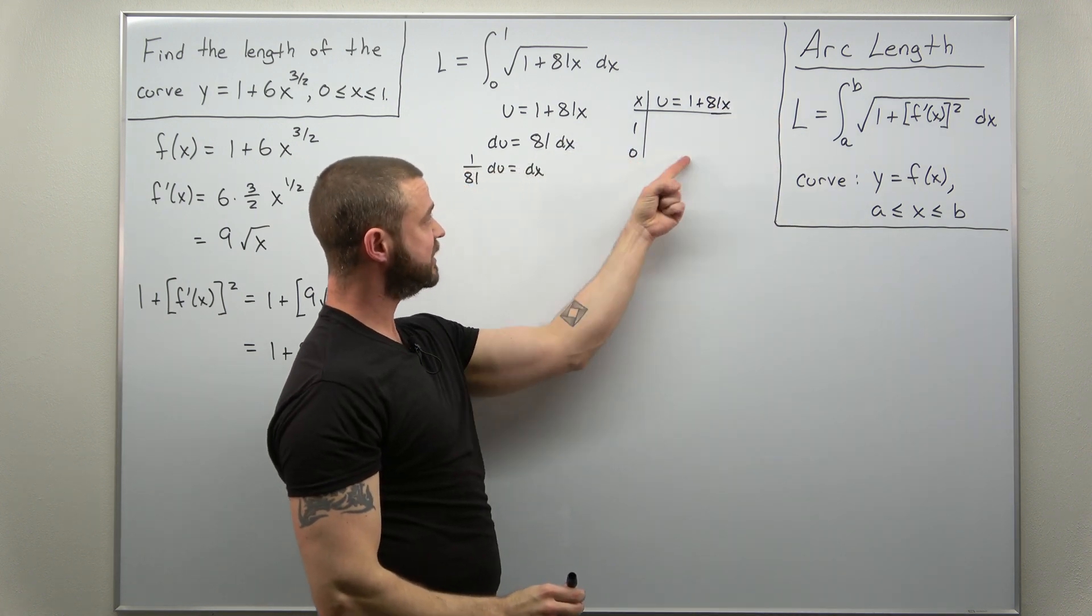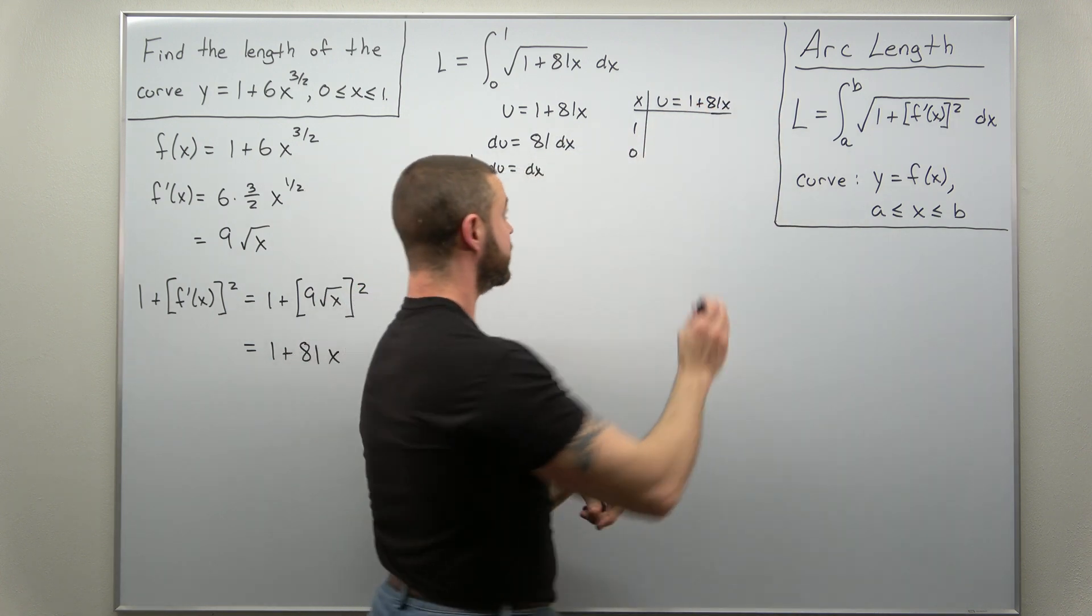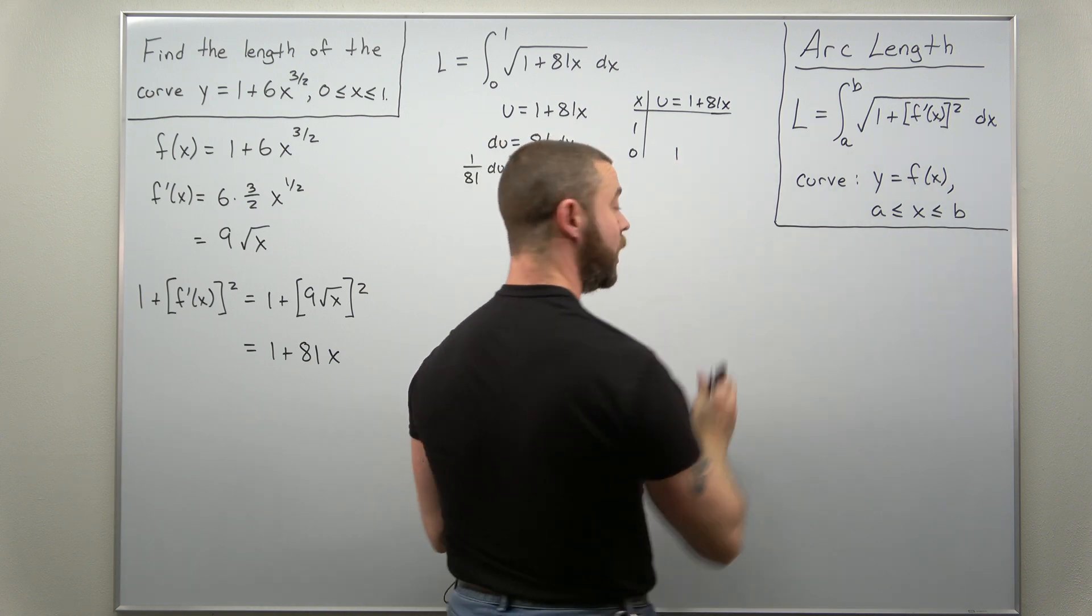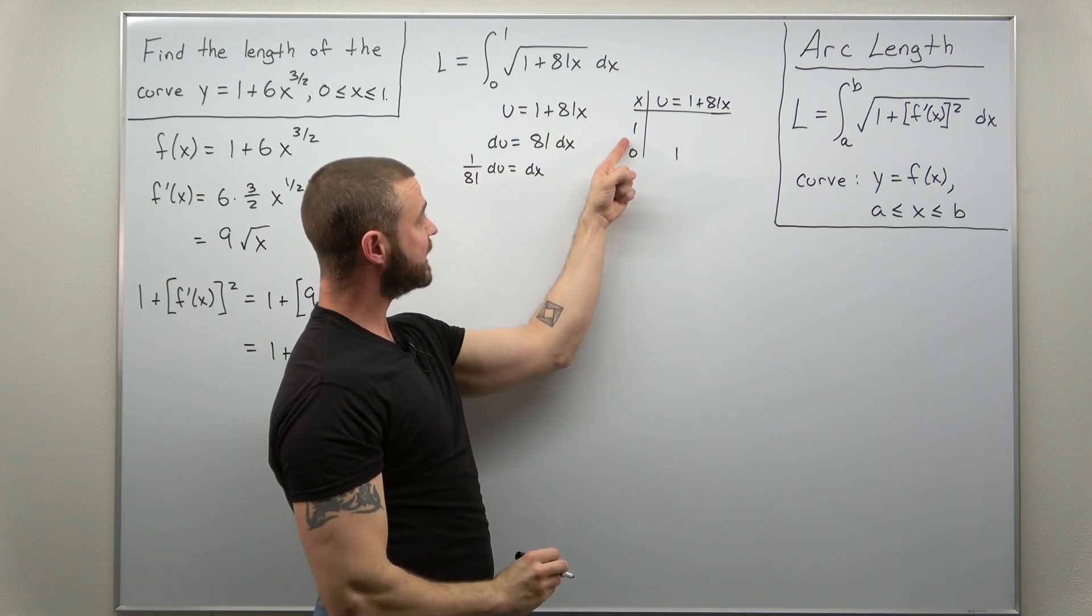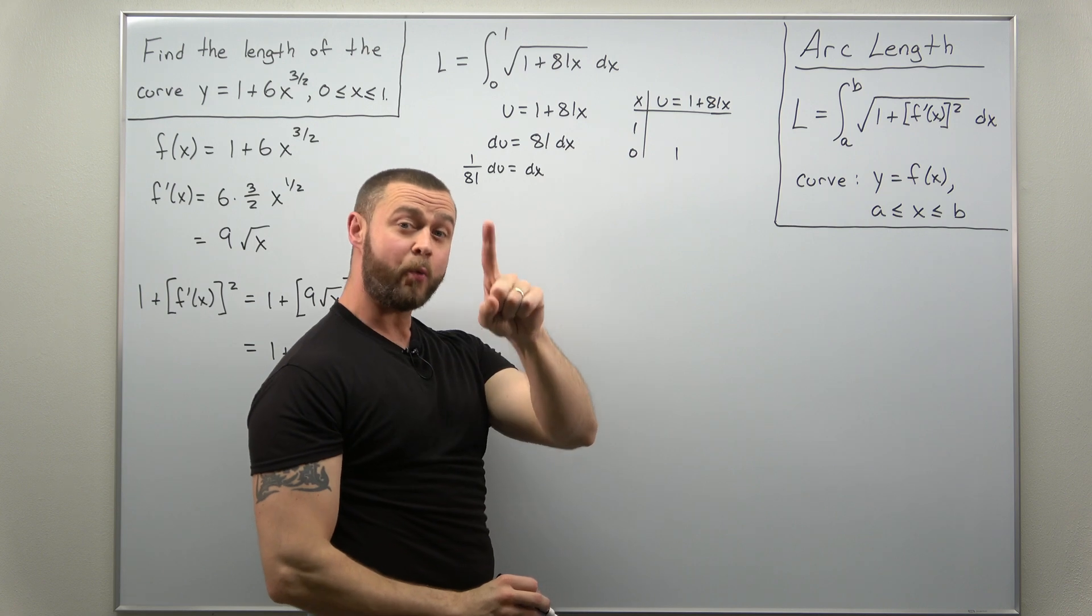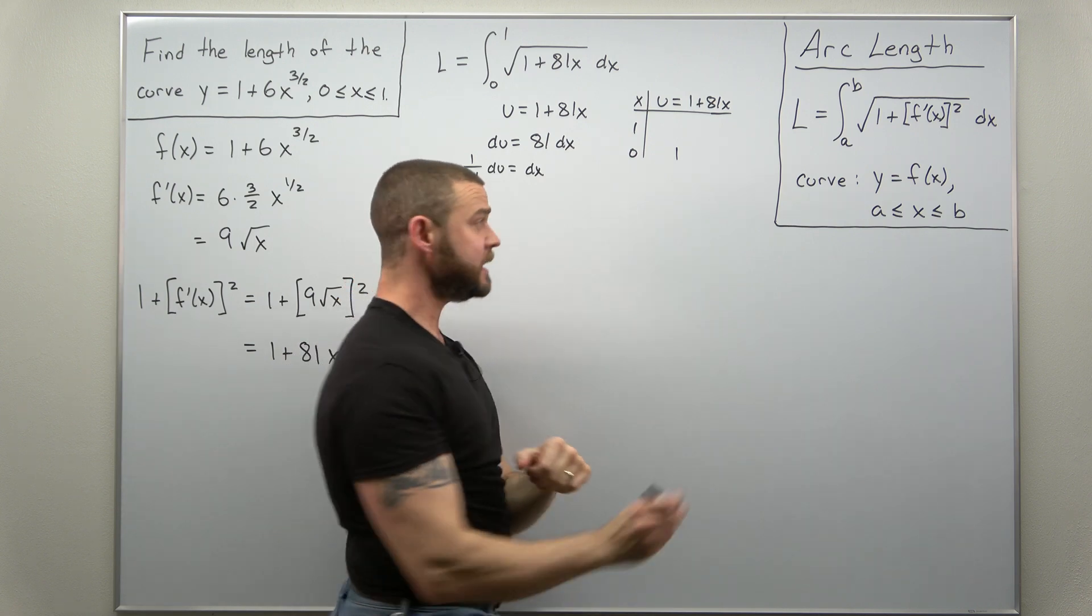And if you plug in first x as 0, that'll come out for you to 1. And if you plug in x as 1, looks like you're going to get 1 plus 81, 82.